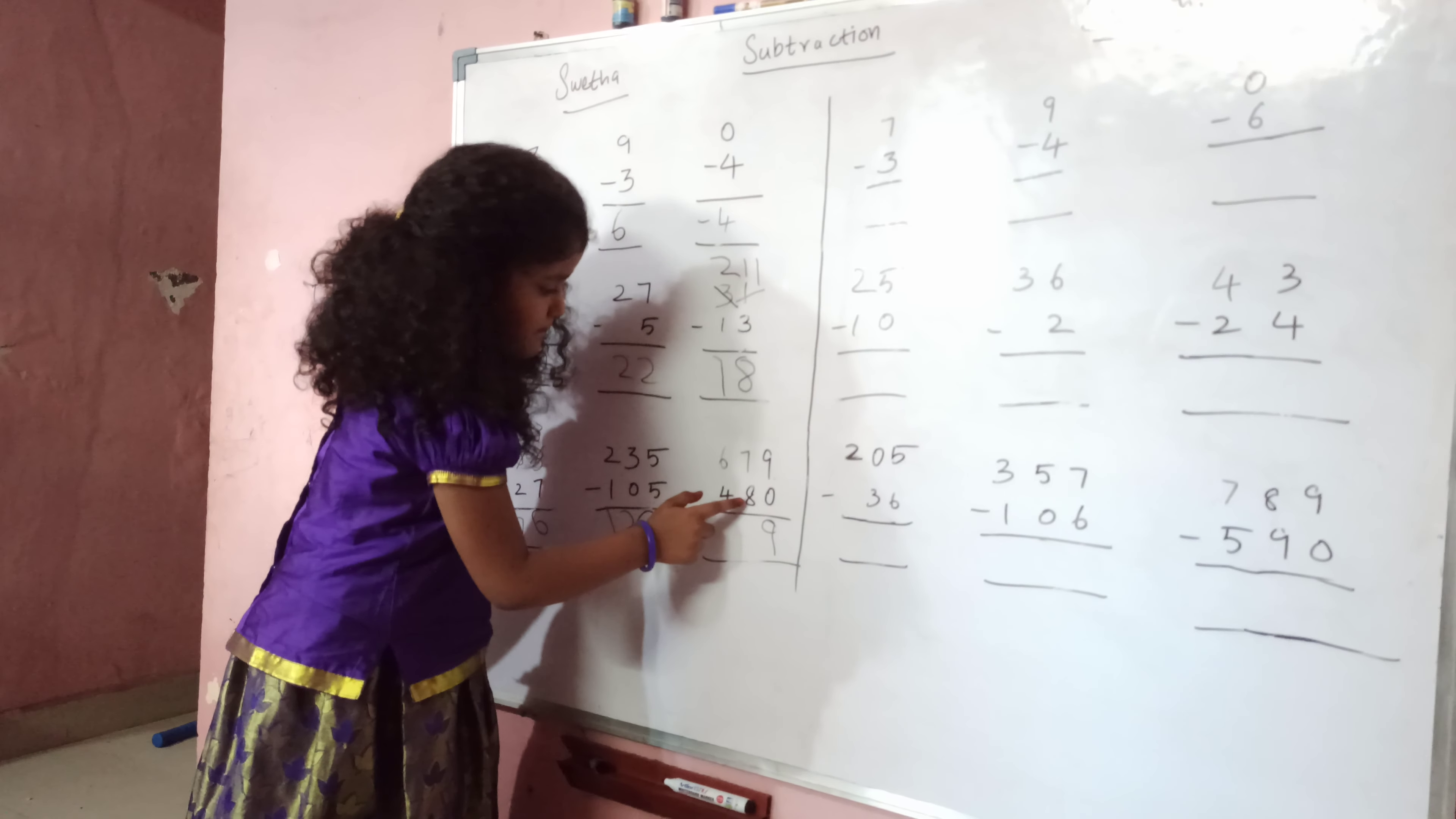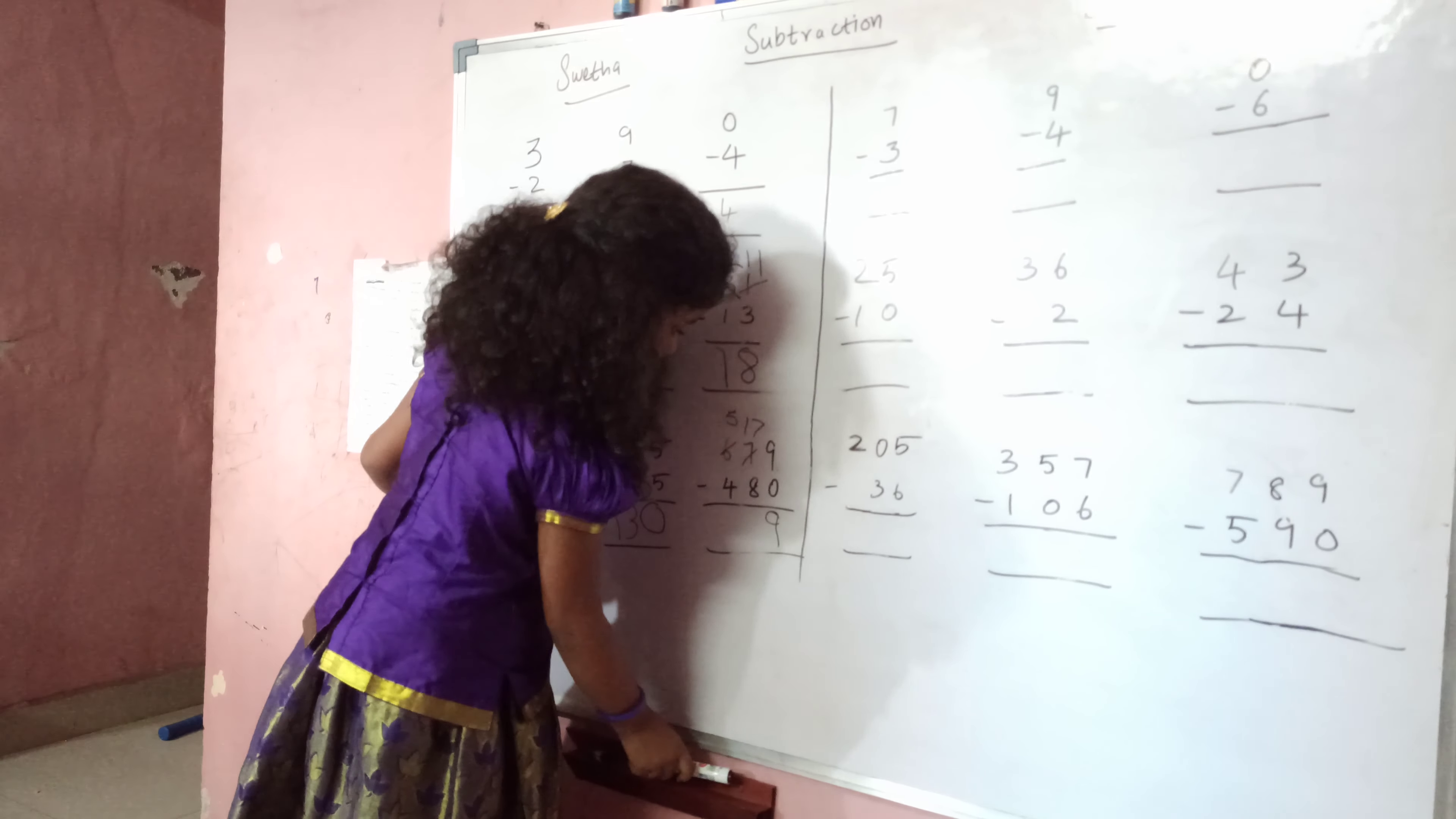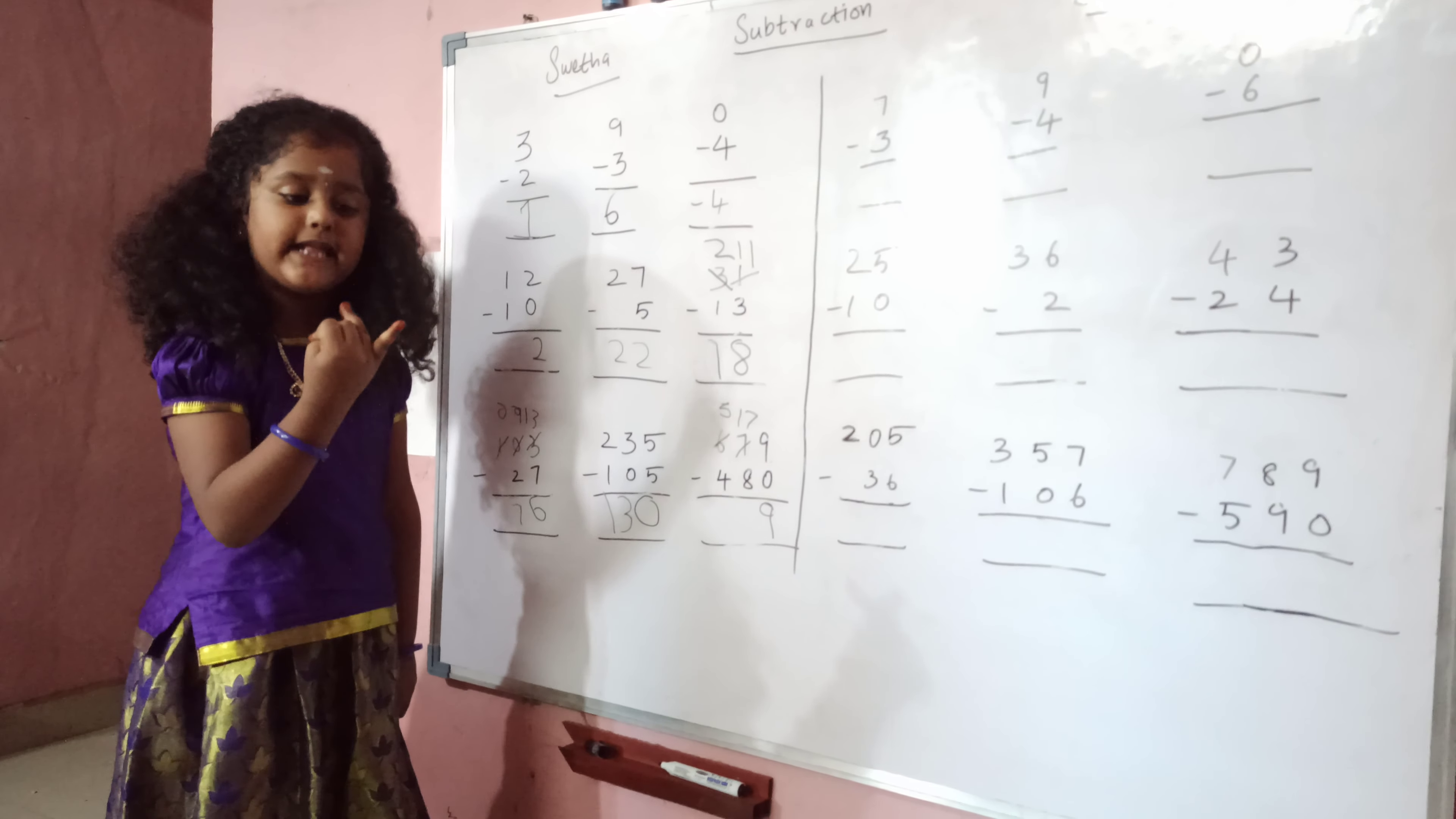Eight is the bigger number, borrow one. Seventeen in the mind, eight in the finger. Add before seventeen, sixteen, fifteen, fourteen, thirteen, twelve, eleven, ten, nine.